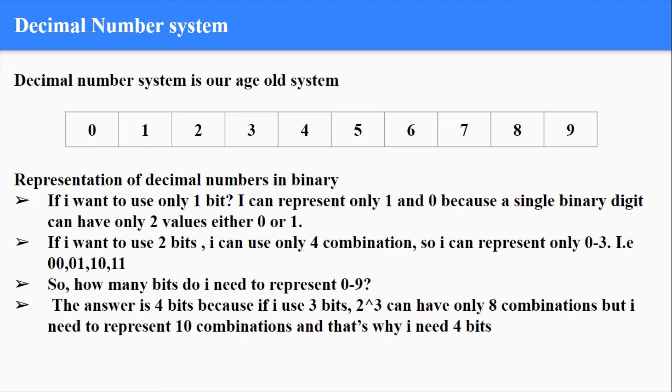If I'm using only one bit, I can represent only two values, so that is 0 and 1. But if I want to represent 2, I don't have a binary value, so I need to use 2 bits. Even if I use 2 bits, I can use only 4 combinations and I can't go beyond 4. So how many bits do I need to represent the complete 0 to 9? The answer is 4 bits.